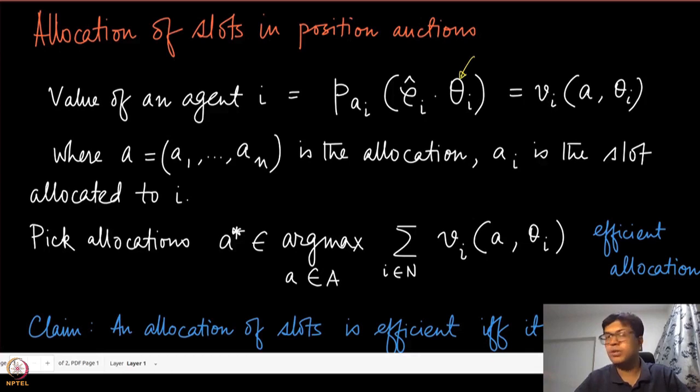Now, the probability of getting a click had two components: the first one was the position component, and the second one was the component of the user, that is the quality component. And now these three things together is the total valuation, expected valuation of this agent.